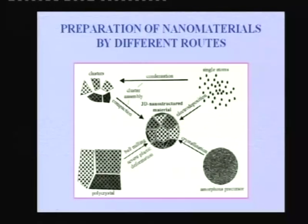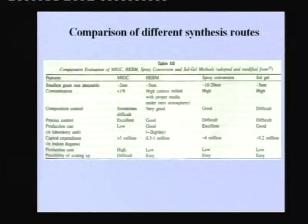Yesterday, we were talking about the various synthesis techniques for nanocrystalline materials preparation. We talked about techniques which start from vapours, from a liquid, and from a solid — basically the three sources for the synthesis of nanomaterials. I made a slide for you to understand the comparison between these techniques, giving you some idea of various parameters and how we can compare different techniques in terms of their advantages or disadvantages.